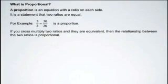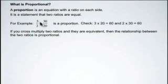And the way to check to see if you do have a proportion is by cross multiplying the two ratios and to see if you get the same answer. So in this case 3 times 20 equals 60 and 2 times 30 equals 60. So we know that it is a proportional relationship between the two ratios.